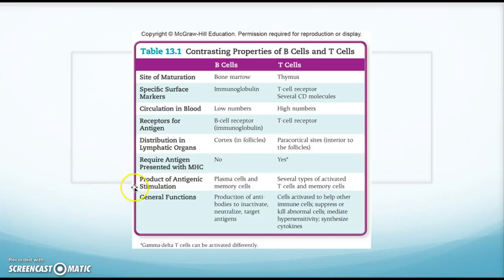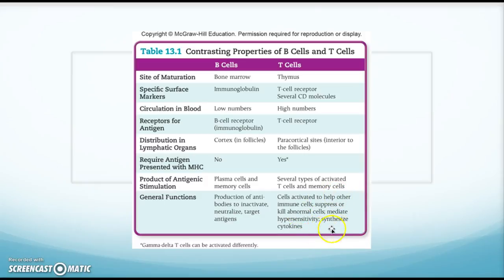When stimulated by an antigen, B cells proliferate into plasma cells and memory cells, whereas T cells go into several types of activated T cells and memory cells — regulatory T cells, helper T cells, or cytotoxic T cells. The general function of B cells is antibody production to target, inactivate, or neutralize antigens. T cells can suppress or kill abnormal cells, mediate hypersensitivity reactions, and synthesize cytokines to communicate between parts of the immune system.